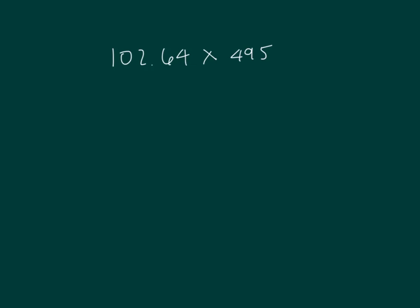Let's do one last problem. 102.64 times 495. That's 102 and 64 hundredths times 495. We write it as hundredths first. And then we have times 495. And then it's step by step.